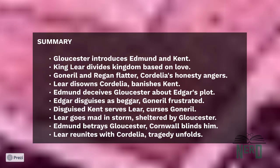Act 3: Despairing for his daughters and deeply regretting rejecting Cordelia, Lear goes mad at the height of a great storm. He and the Fool run wild on the heath until Gloucester takes them into a hut for shelter. He then seeks the aid of Kent to get them away to the coast, where Cordelia has landed with a French army to fight for her father against her sisters and their husbands. Gloucester then leaves and returns home.